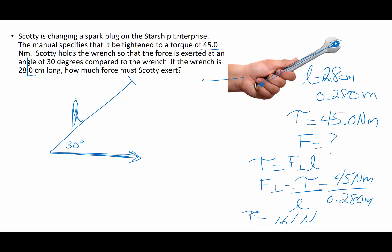So what I just found here was the applied force must be 161 Nm. So that means this perpendicular component has to be 161 Nm. What I want to know is what does Scotty have to exert with his hand?